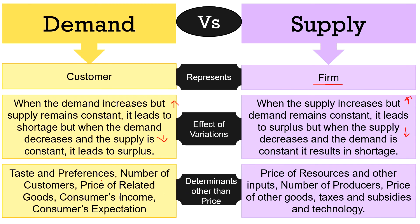Determinants of demand other than price include taste and preferences of consumers, number of customers, price of related goods, consumer income, and consumer expectations about prices of the good. Whereas factors influencing supply other than price include price of resources and other inputs, number of producers, price of other goods, taxes and subsidies, technology used, and size of the industry.